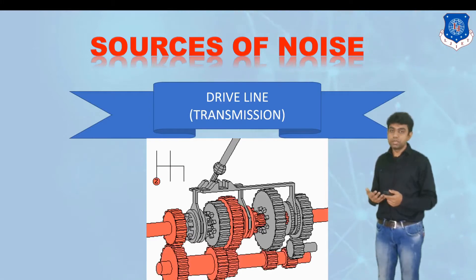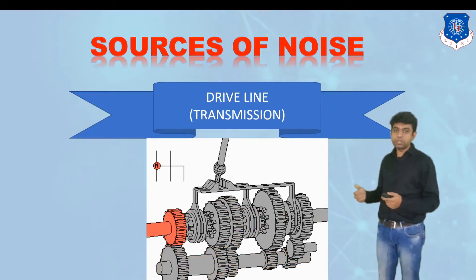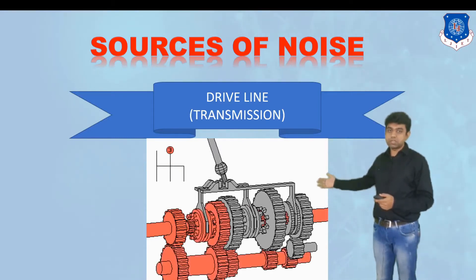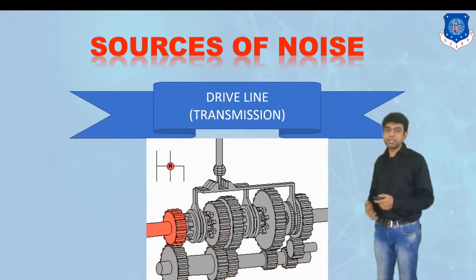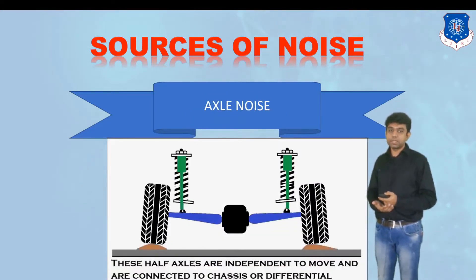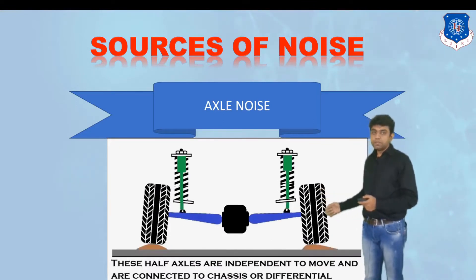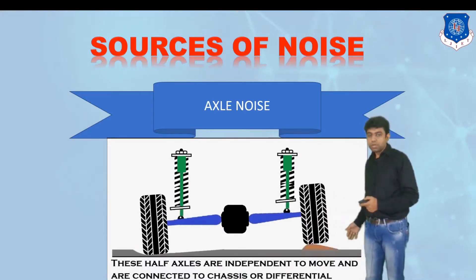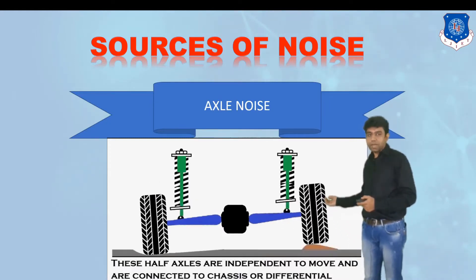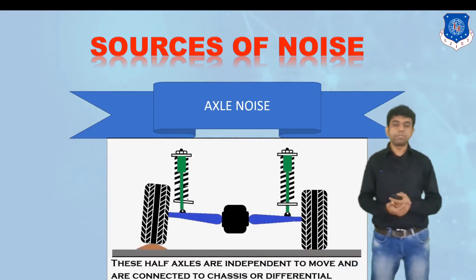The second noise source is driveline or transmission noise. Whenever we are changing gear, there is meshing of gears which can lead to the generation of noise in the driveline assembly. The third source is axle noise. The axle is directly connected to the wheel, which is in contact with the road. From the road surface, noise and vibration are transmitted to the axle, and the amount of noise coming from that part is axle noise.